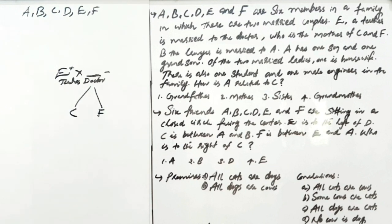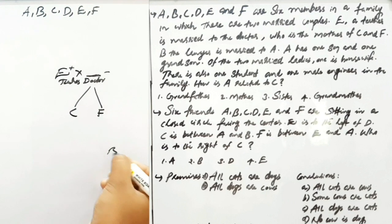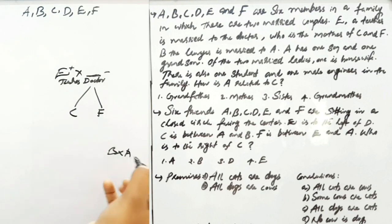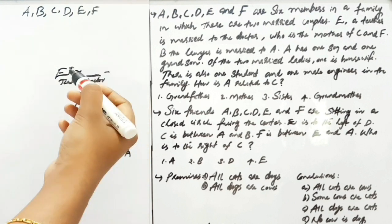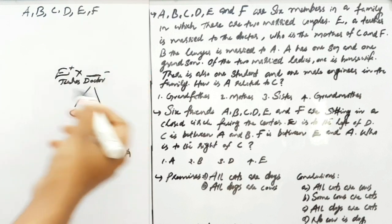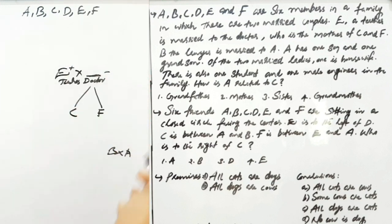B, the lawyer, is married to A. So B and A are the second couple. We have two married couples here.